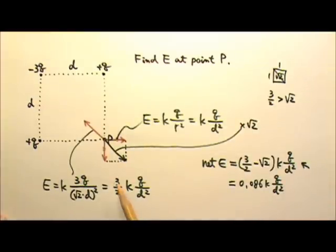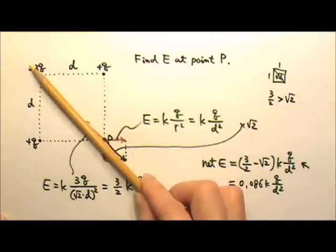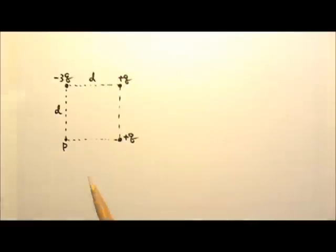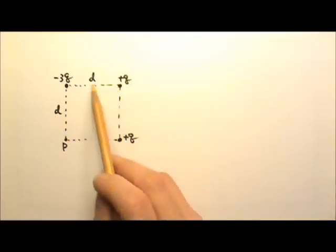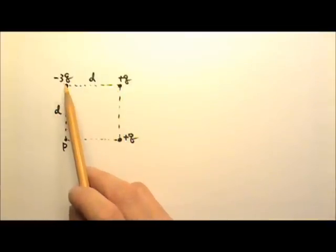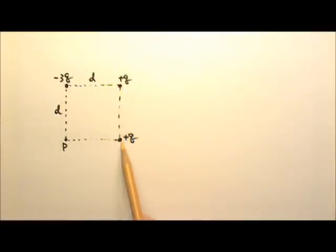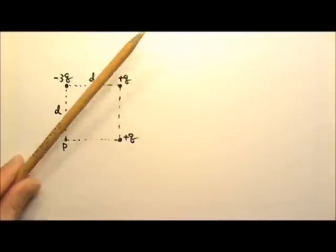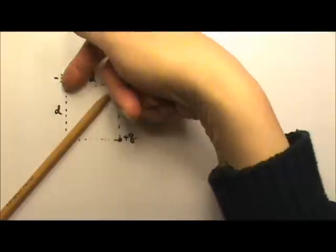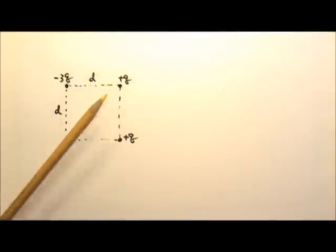Just in case you see a square problem that does not give you symmetry along the diagonal, let's look at this scenario. In this case, the square still has each side D, and the three charges are negative 3Q, positive Q, positive Q, just arranged differently, and you're looking for the electric field here. In this case, there is no symmetry along the diagonal.